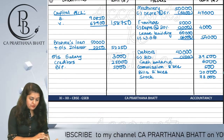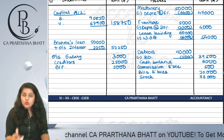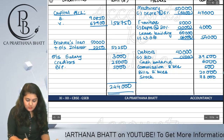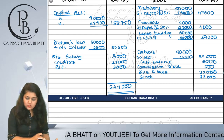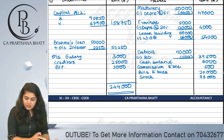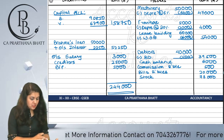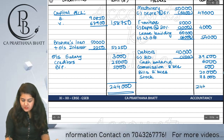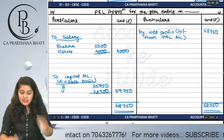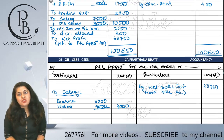Balance sheet totals: capital 1,58,750 plus Brahma's loan 52,250 plus outstanding salary 3,000 plus creditors 25,000 plus bills payable 5,000 = 2,44,000. Asset side includes leasehold 54,000, machinery 47,000, furniture 4,000, debtors 39,500, bills receivable 20,000, stock 73,000, cash 6,000, and other items totalling 2,44,000. That completes the final accounts of the partnership firm.